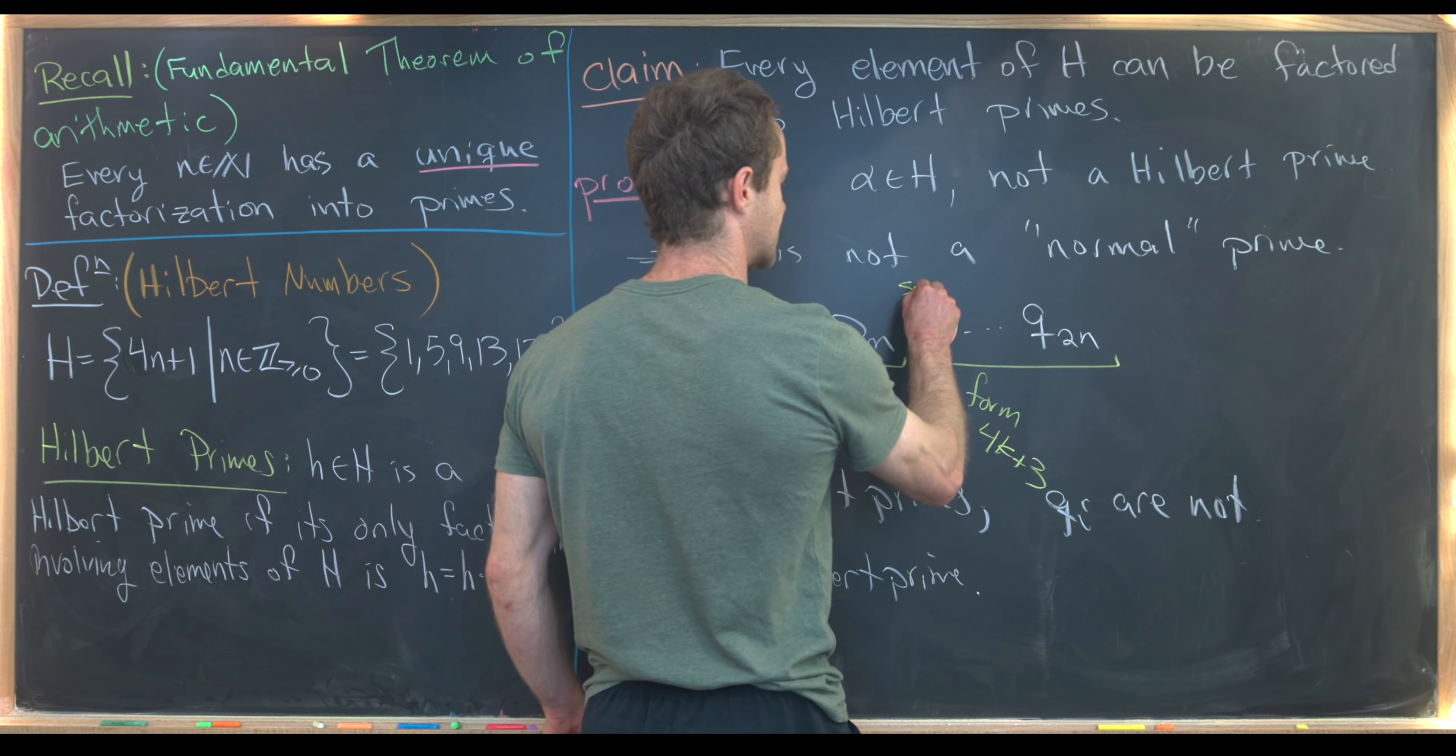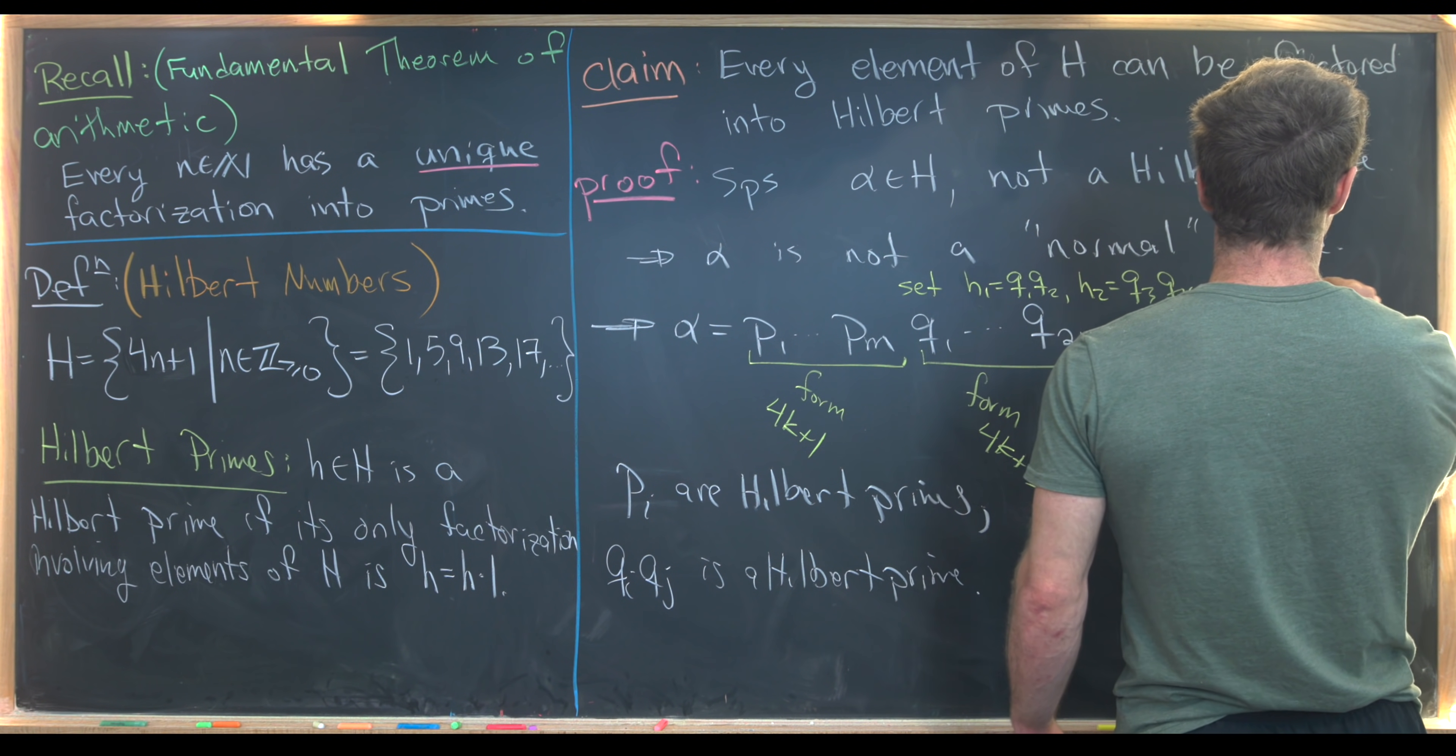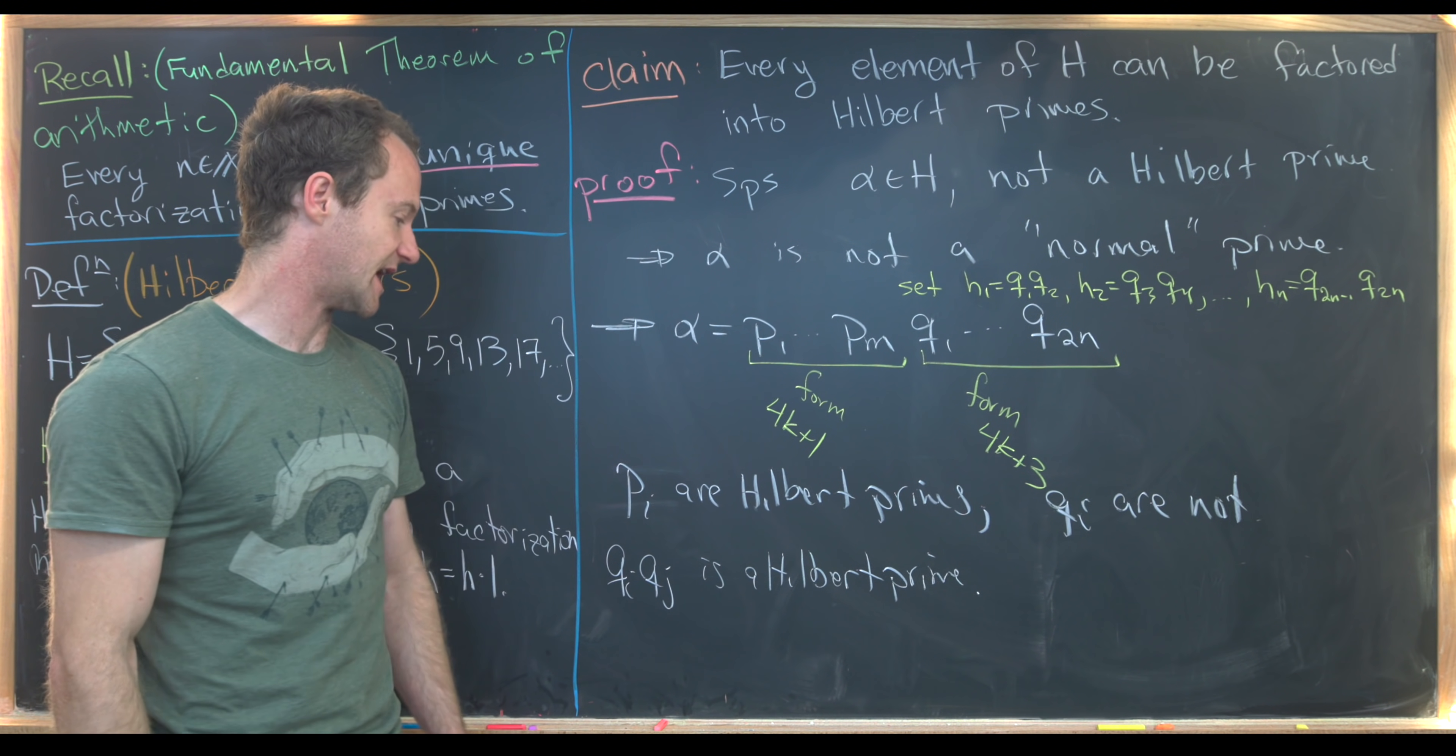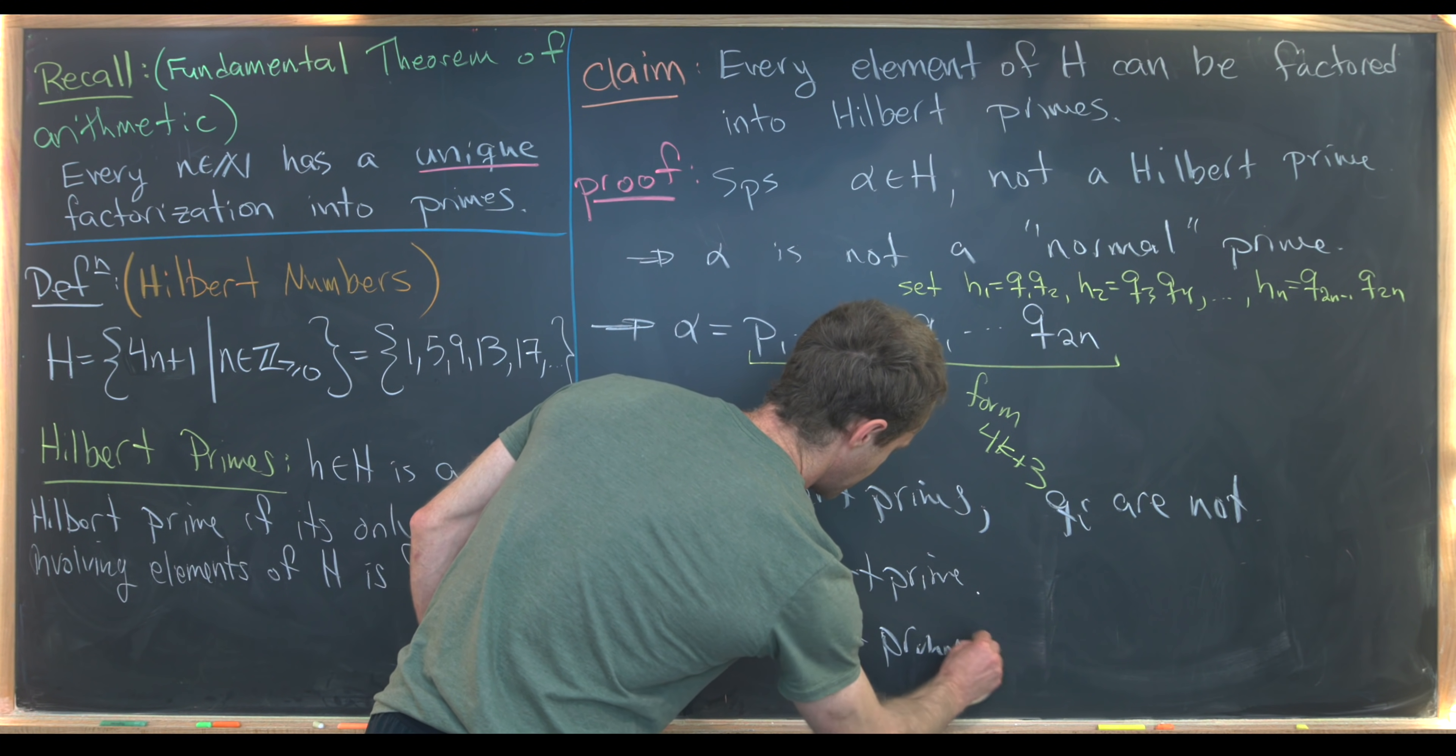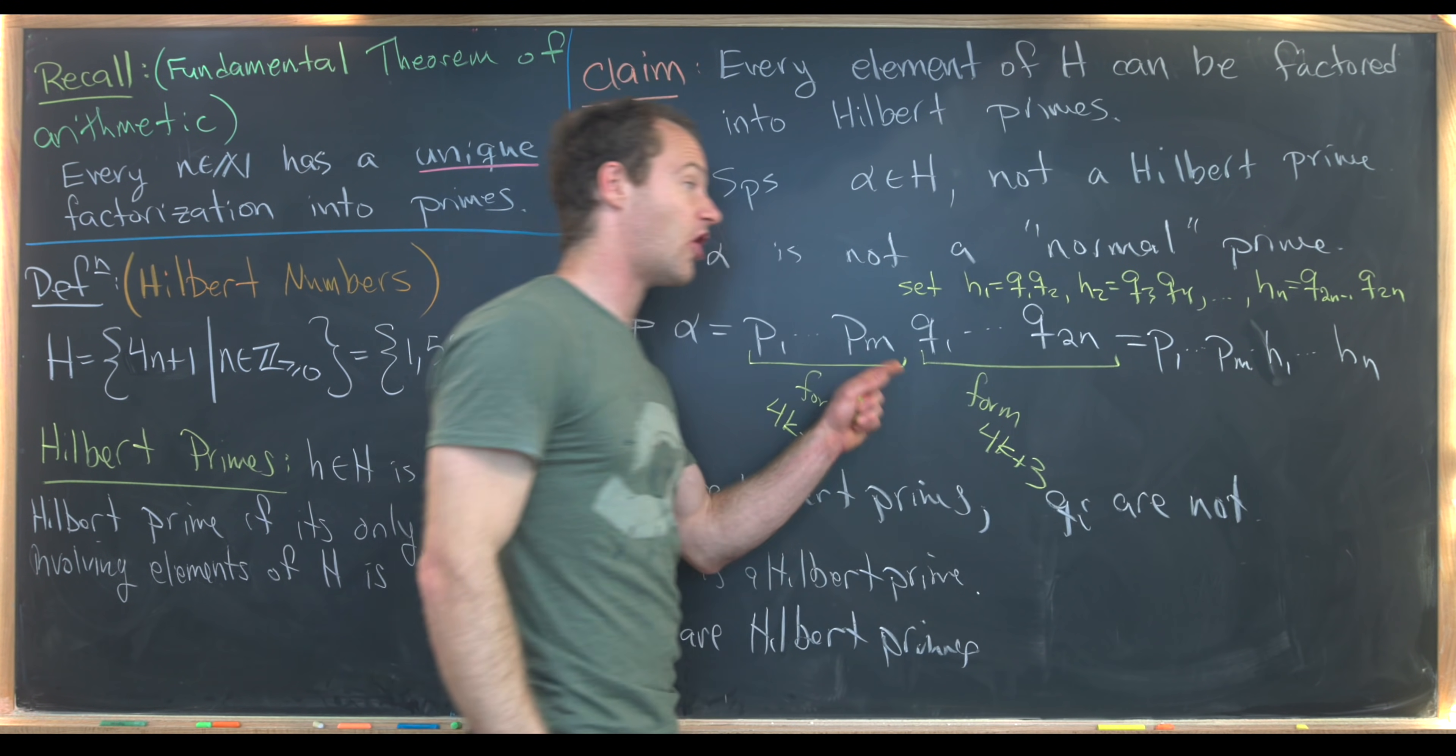Again, because the only way that it can be factored is as QI times QJ, but that factorization is not legal within the Hilbert numbers. So now I'm going to introduce some notation. Let's maybe go ahead and set H1 equal to Q1 times Q2, H2 equal to Q3 times Q4, all the way up to HN is equal to Q2N minus 1 Q2N. So that's just pairing these primes of the form 4K plus 3 into pairs, which are these HI. And by this observation down here, these HI are in fact Hilbert primes.